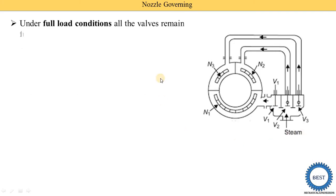Under the full load condition — when the turbine is run on full load — all the valves remain fully open. All valves V1, V2, and V3 are fully open and the full mass of steam is supplied to the turbine.